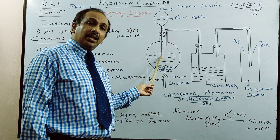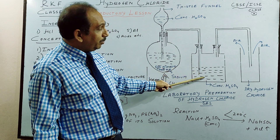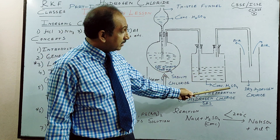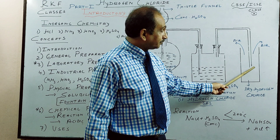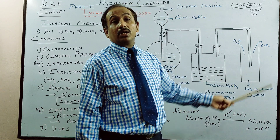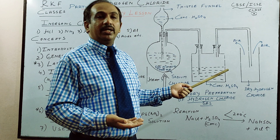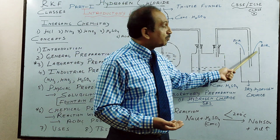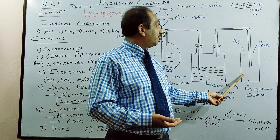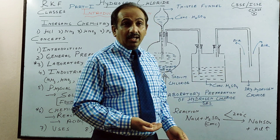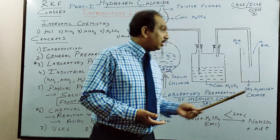Finally the gas is collected in air — we don't collect it in water because it is highly soluble in water. We collect it by upward displacement of air because hydrogen chloride is heavier than air. We will see the fountain experiment in part two. The method of collection is upward displacement of air, as hydrogen chloride is heavier than air — it settles down. We take sodium chloride and concentrated sulphuric acid as reactants.